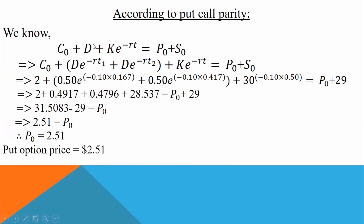We have to add the dividend term. The modified put-call parity includes: C0 + D·e^(-rT1) + K·e^(-rT) = P0 + S0, where D·e^(-rT1) accounts for the present value of the dividend paid at time T1.